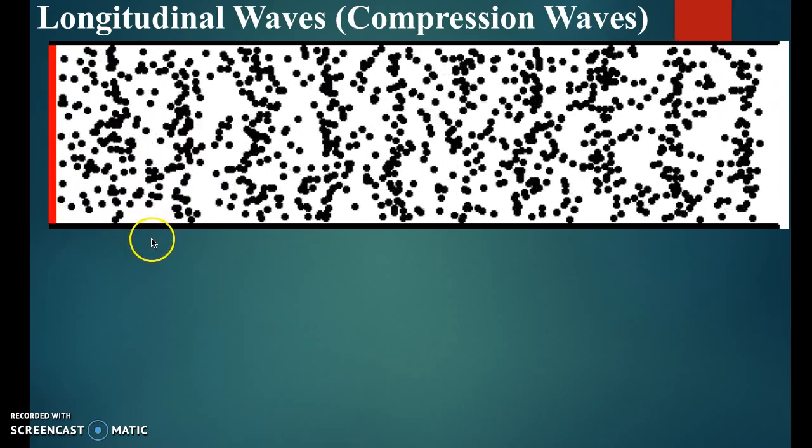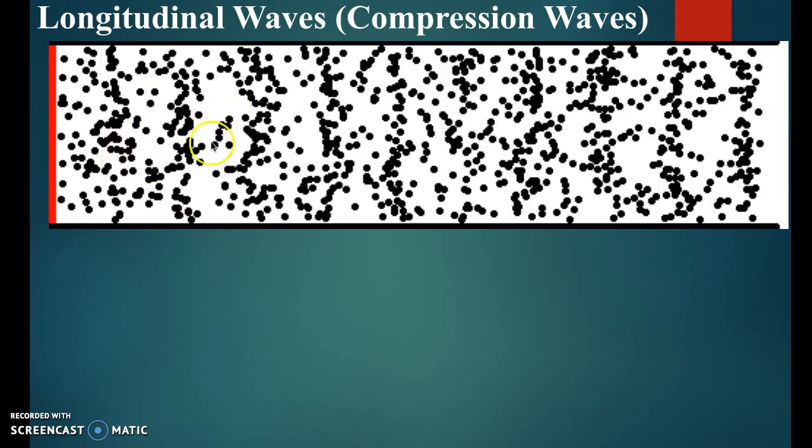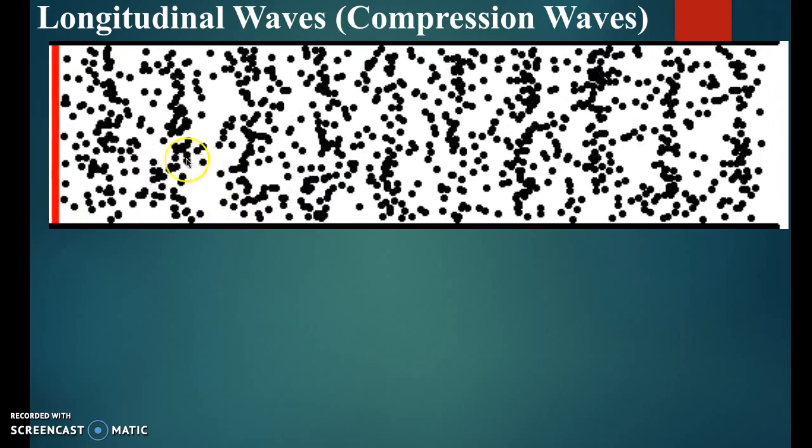Hopefully you can see they're just kind of bouncing back and forth. This is a longitudinal wave, and sound is really the main kind of longitudinal wave that we're going to investigate. This is the same way that sound travels through the air. If you can imagine these are particles in the air, and they're bouncing off each other as energy travels through them. This is how sound travels from one place to another.